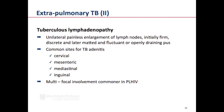Tuberculosis involving the lymph nodes usually presents with unilateral painless enlargement. These nodes initially tend to be firm and discrete, but later become matted and fluctuant, and may openly drain pus. Common sites of lymph node TB include the cervical area, the mesenteric area, intrathoracic nodes, and the inguinal area. In HIV-infected individuals, it is very common to see multifocal involvement of lymph nodes.